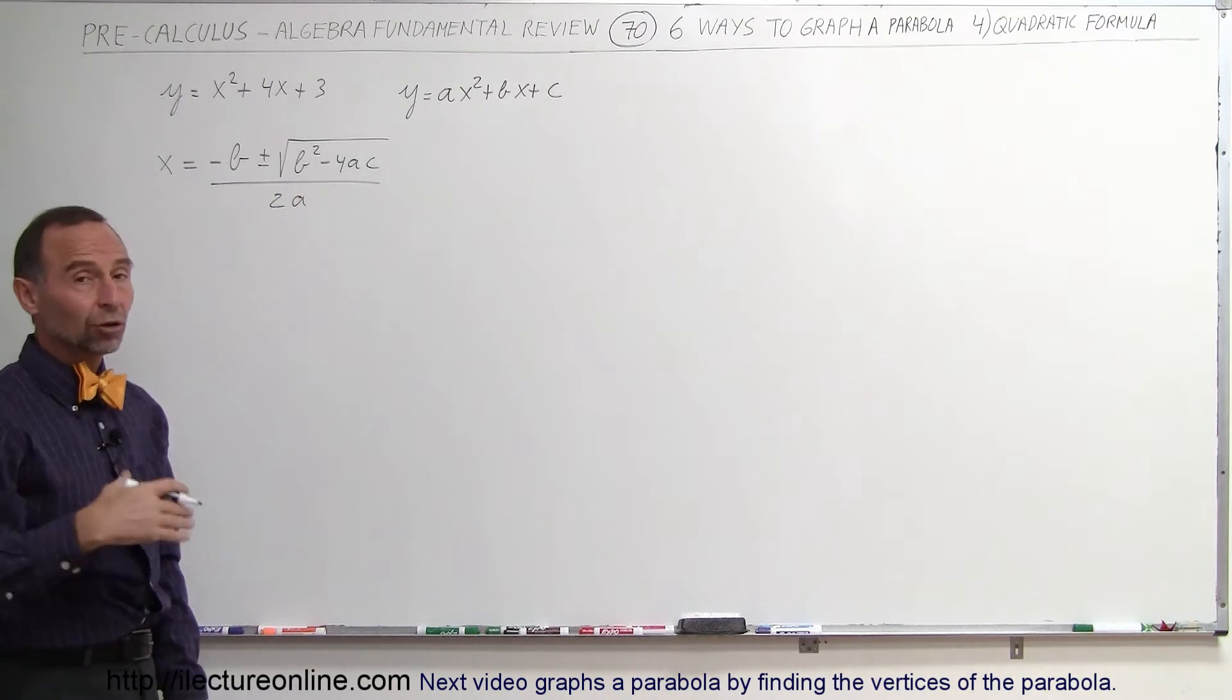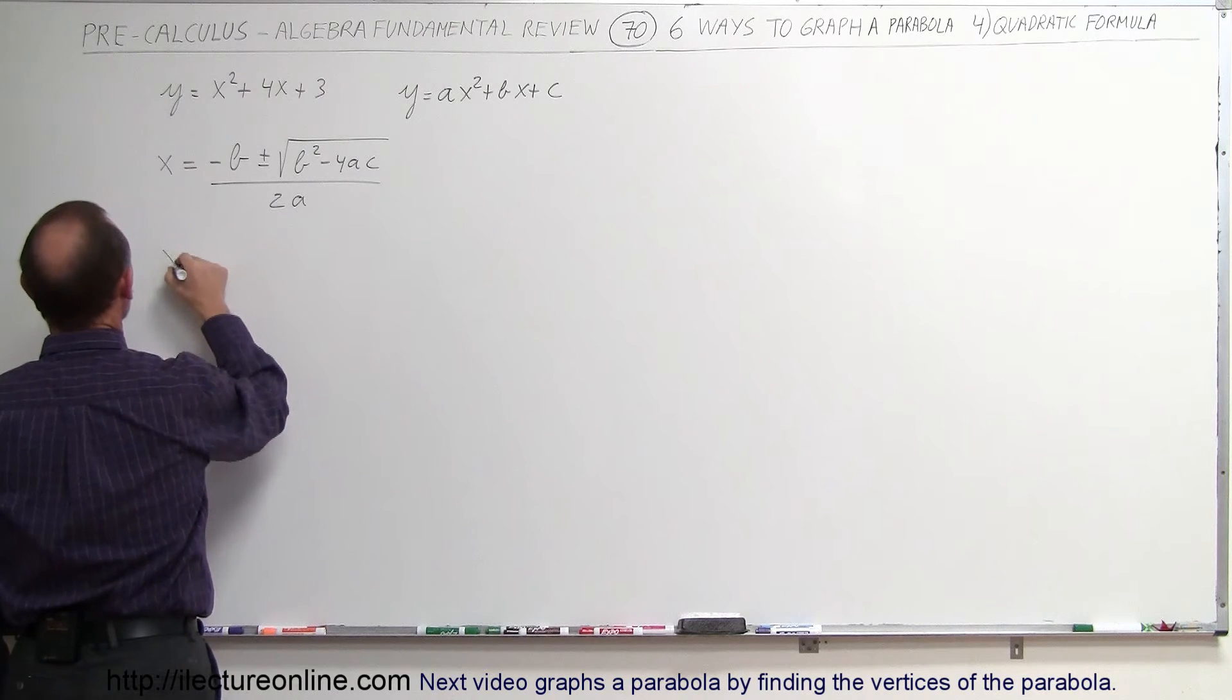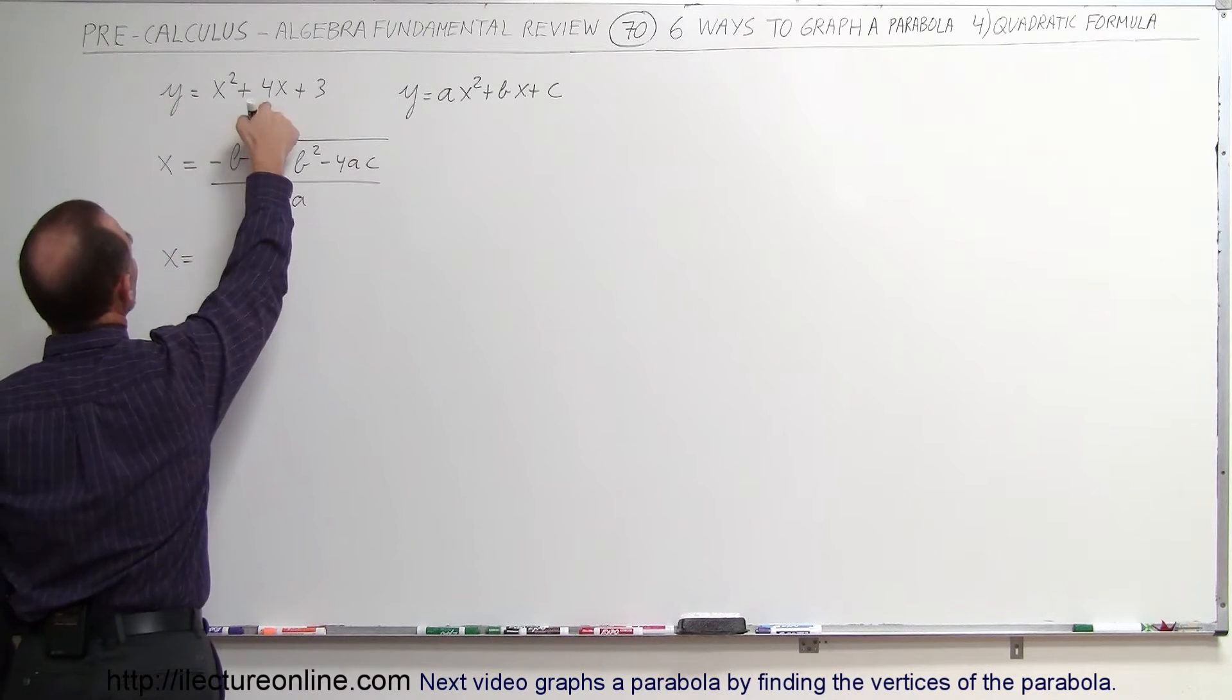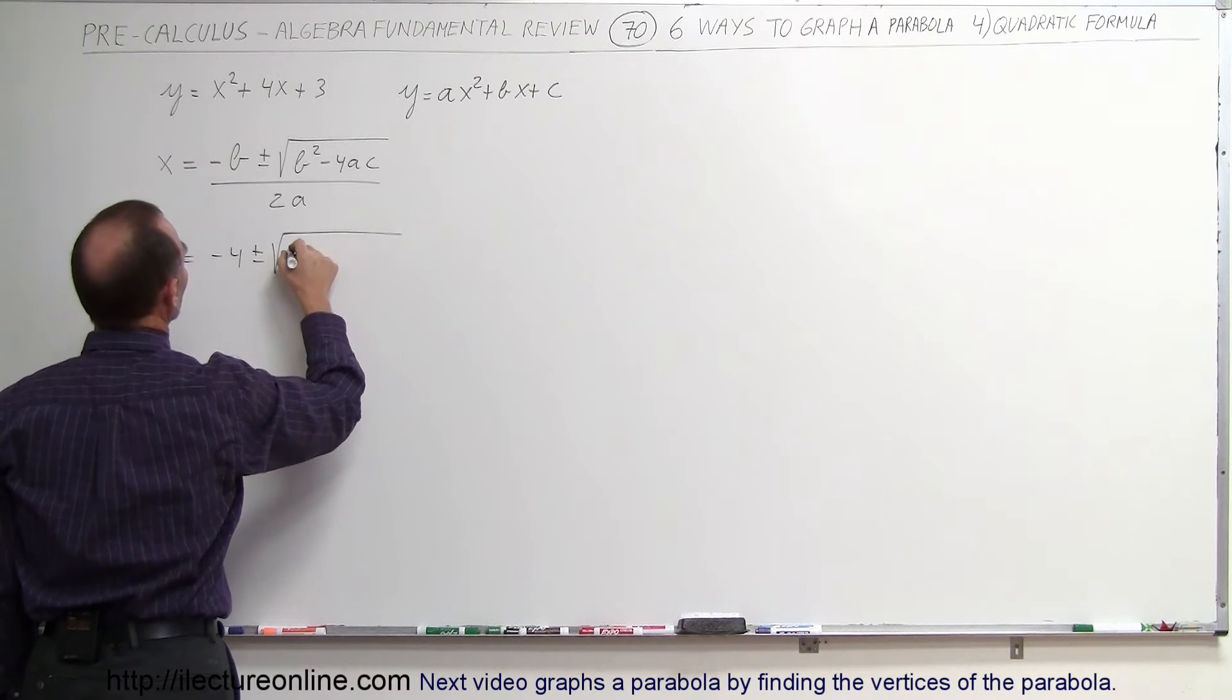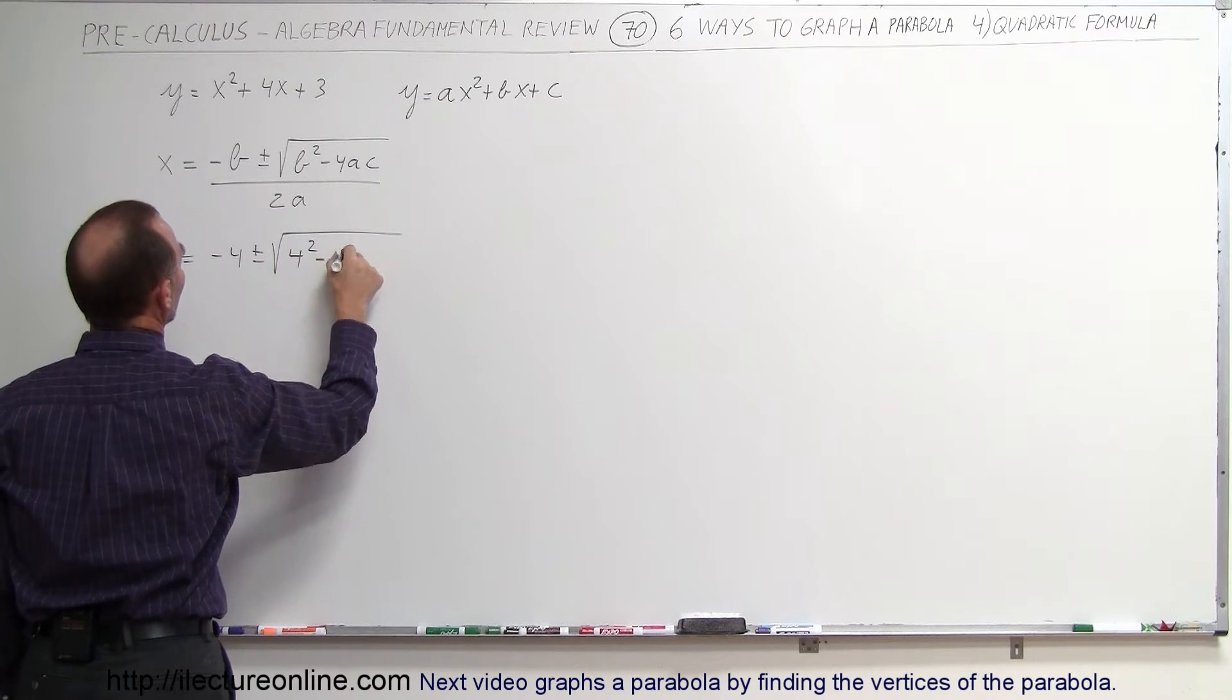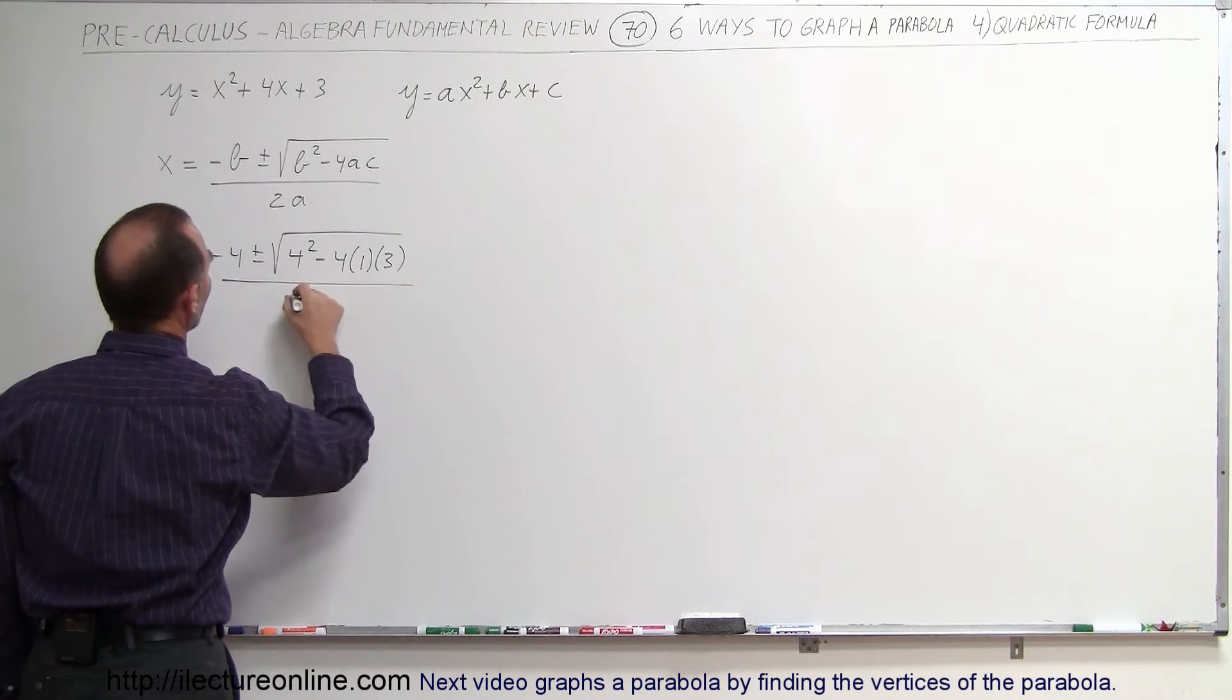All we have to do now is plug in those numbers and solve for the two solutions. So in this case, we can say that x is equal to minus b, b is 4, so minus 4 plus or minus the square root of b squared, which is 4 squared minus 4 times a times c, and the whole thing divided by 2 times a.